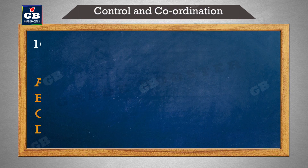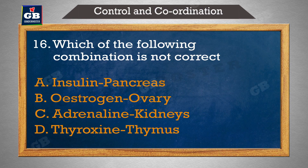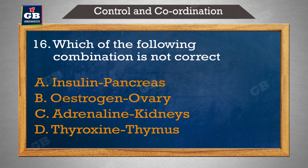Which of the following combination is not correct — nimn mein se kaun sa combination sahi nahi hai: A) insulin – pancreas, B) estrogen – ovary, C) adrenaline – kidneys, D) thyroxine – thymus.